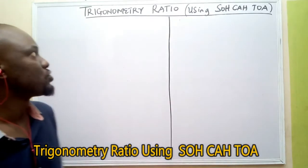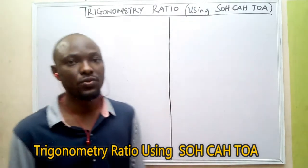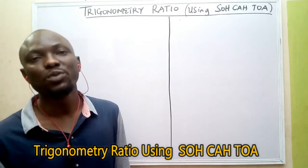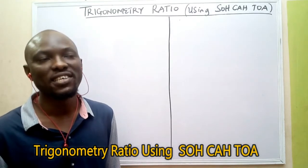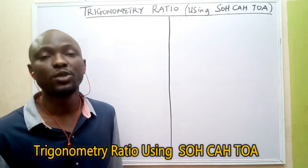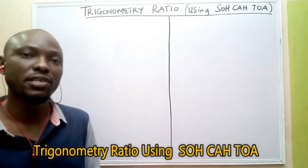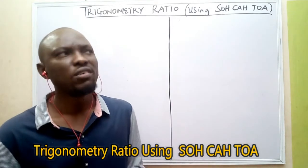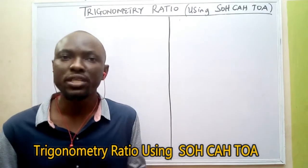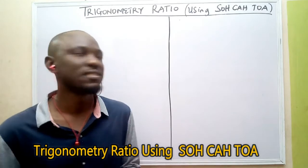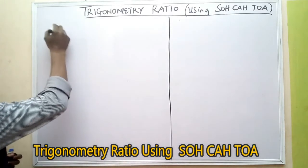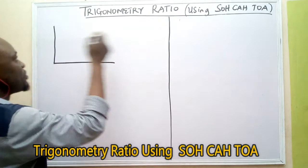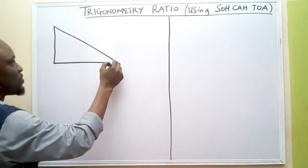Today we'll be looking at trigonometry ratios. When you have a right angle triangle, there are two things you can do: either you're given two sides and you want to find the third side — you're going to use Pythagoras' rule — or we use SOHCAHTOA when you have a combination of angles and sides. You need to understand how to make use of SOHCAHTOA.